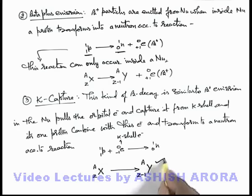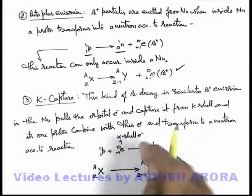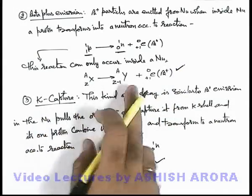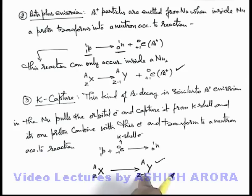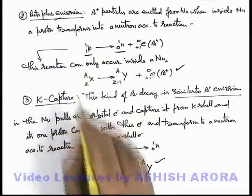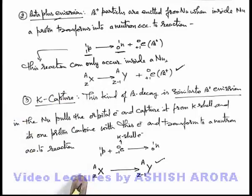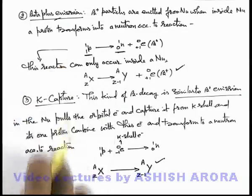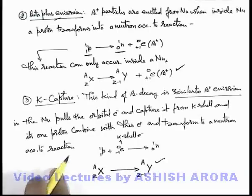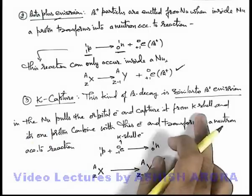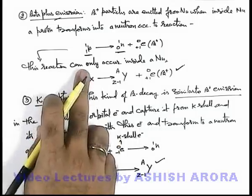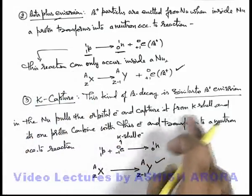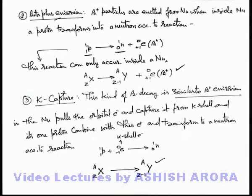In nuclear form, if the parent nucleus X has charge Z and mass number A, and it captures its internal K shell electron, it transforms to the daughter nucleus Y with nuclear charge Z minus 1 and mass A. Physically, no particle is emitted from the nucleus. As this reaction is similar to beta plus emission, in different situations either of the two phenomena can take place, but the possibility of K capture is very less unless the K shell is very close to the nucleus, so that the K shell electron is captured before beta plus emission occurs.